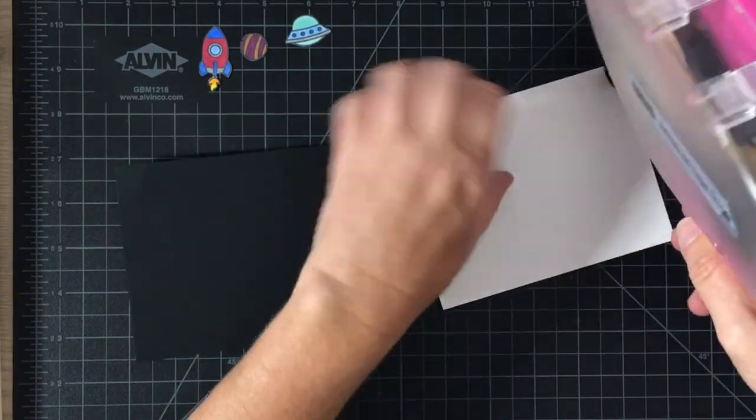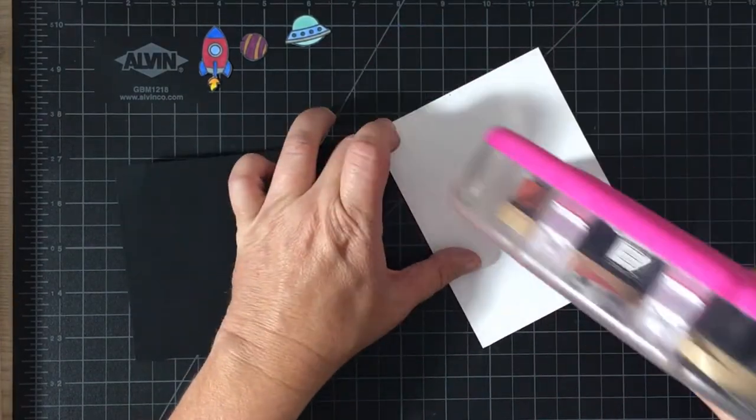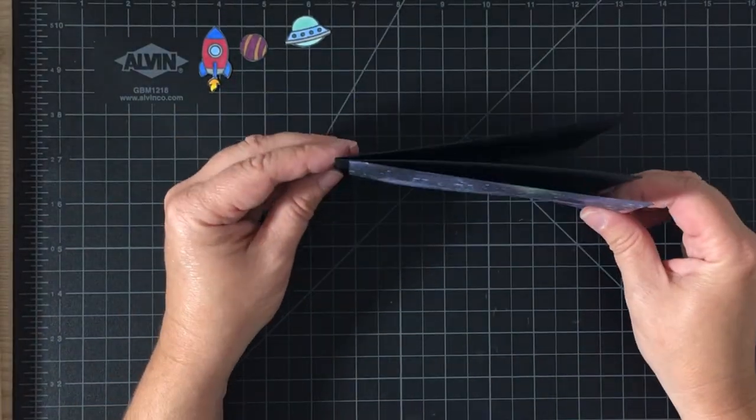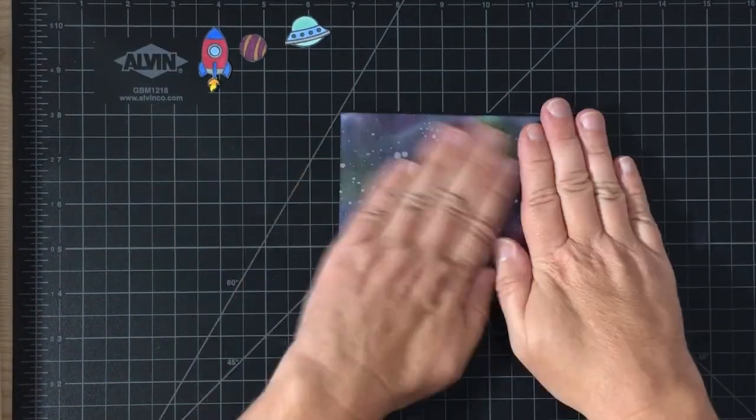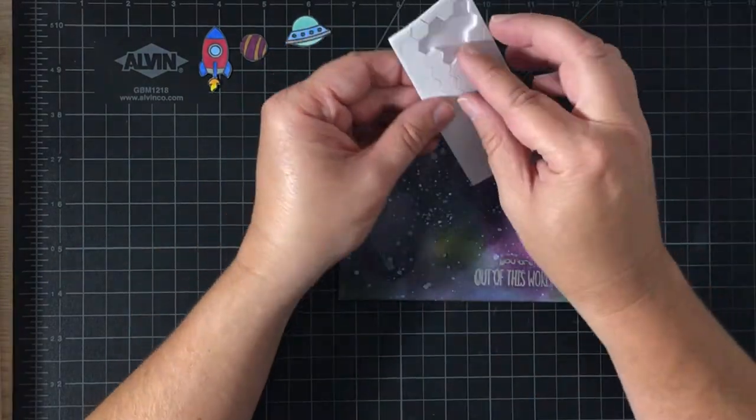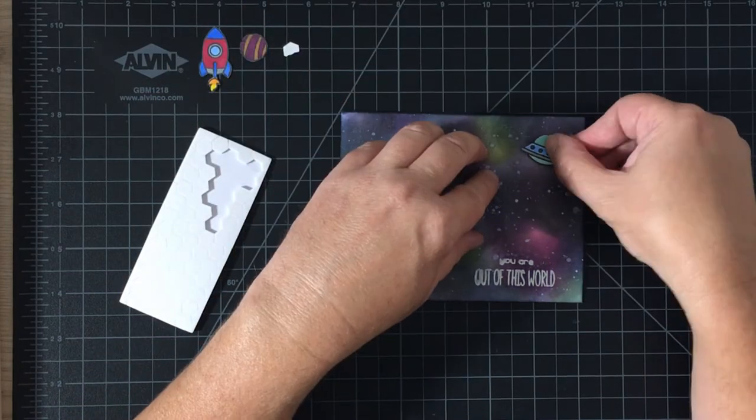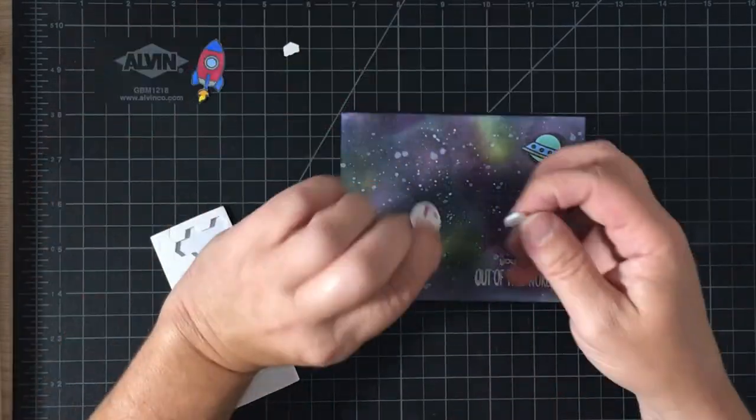Now it's time to assemble my card. I am using a four and a quarter by five and a half card base. I am using my Scotch ATG gun to adhere the panel to the card base, and I'm going to use some foam squares to adhere the elements to the card.